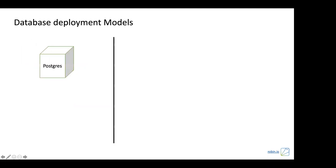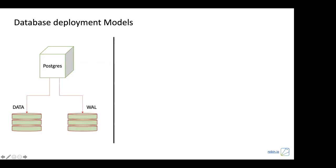Let's talk about standard database deployment models. Take a Postgres application running in a container on Kubernetes. You need a data volume provisioned through a CSI. But in a production environment, this isn't enough — Postgres and other databases recommend putting the write-ahead log or redo/undo logs on a different disk. So naturally, we provision another volume from Kubernetes CSI. Our Postgres application is therefore the container plus two volumes: a data volume and a WAL volume.